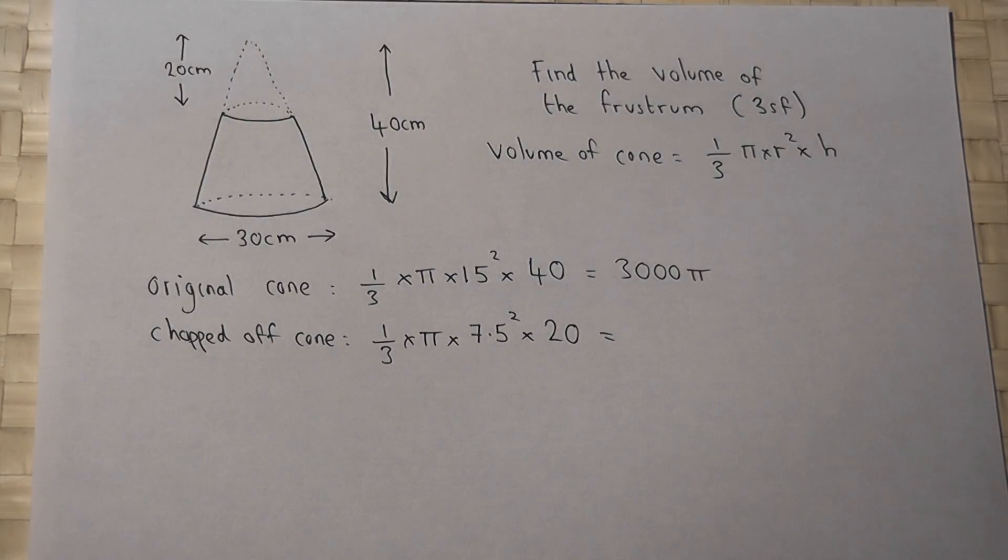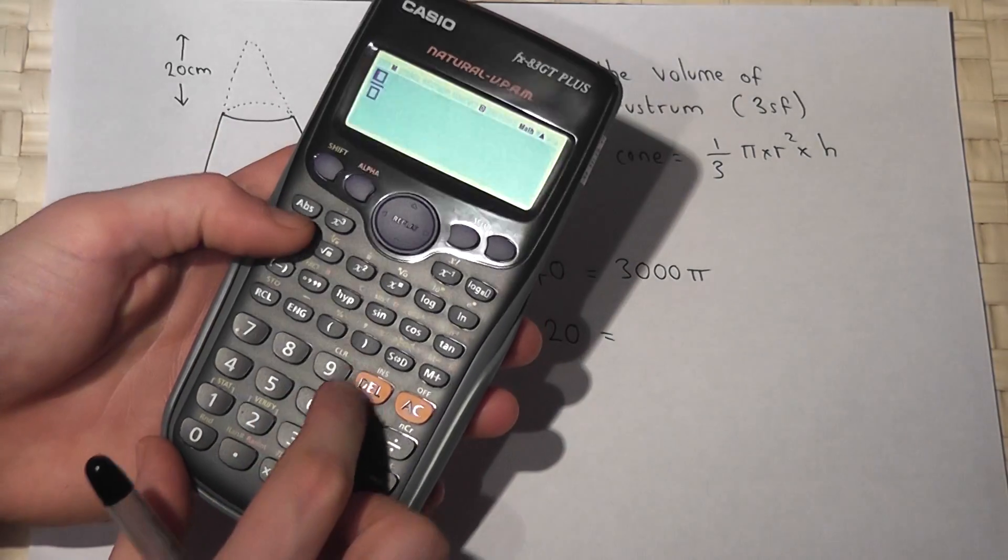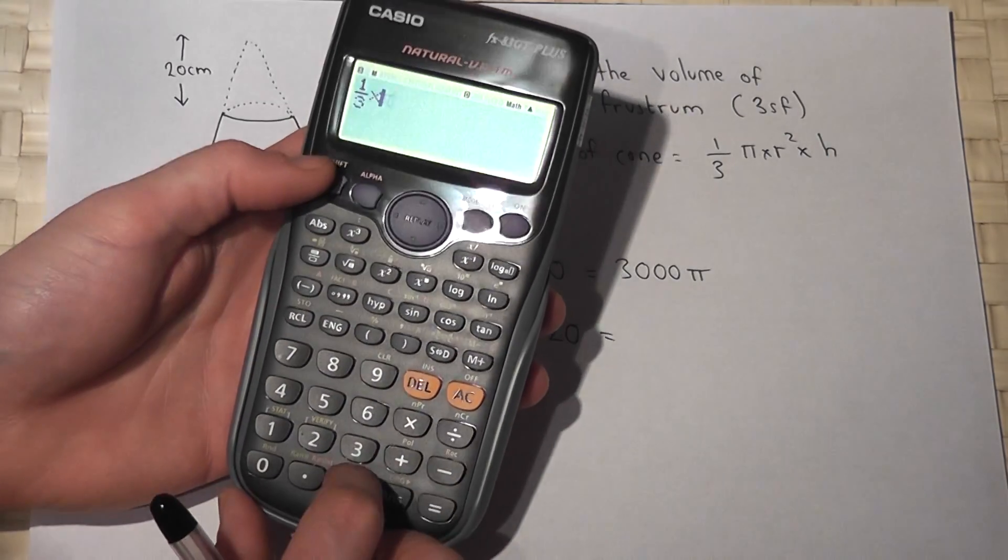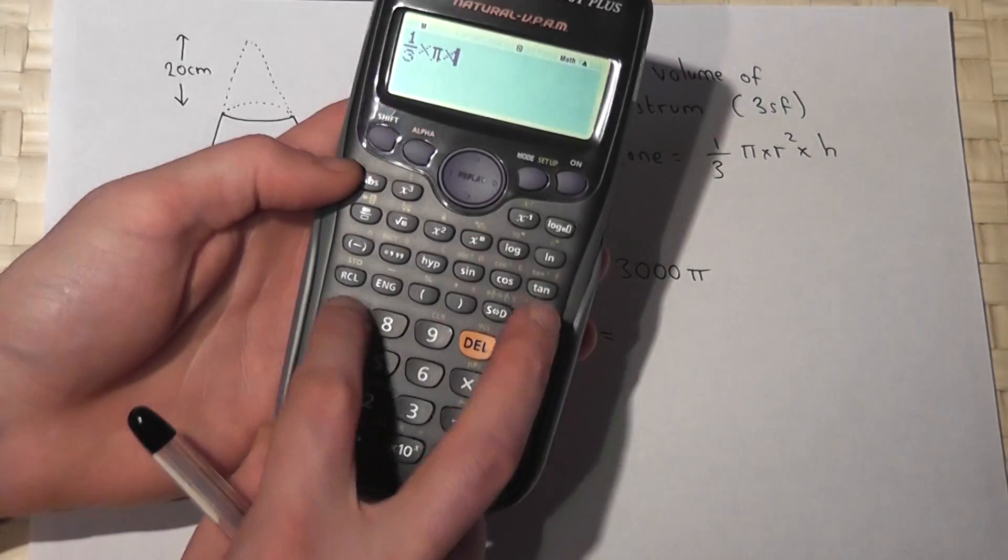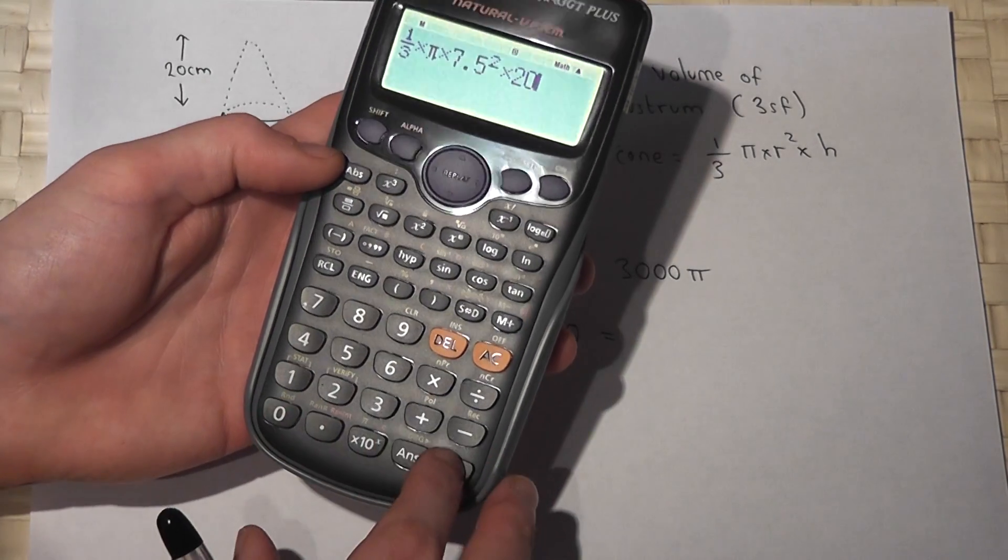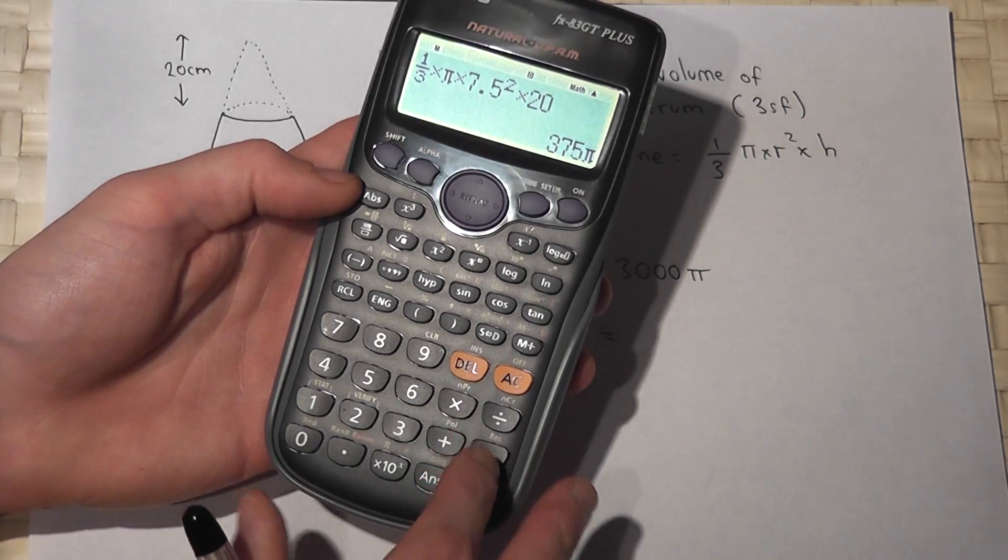So if I now work out that, it's still a third, that's what it always is for a cone, times by pi times by 7.5 squared this time, times by 20 for its height, and that's 375 pi.